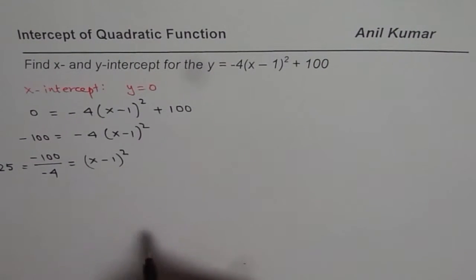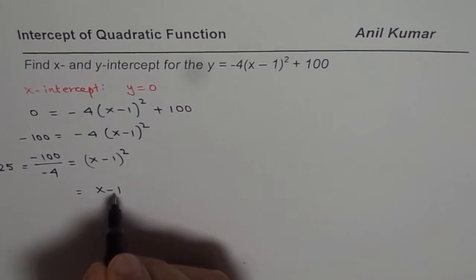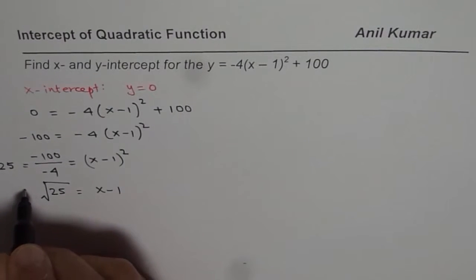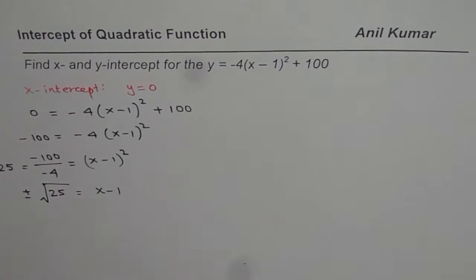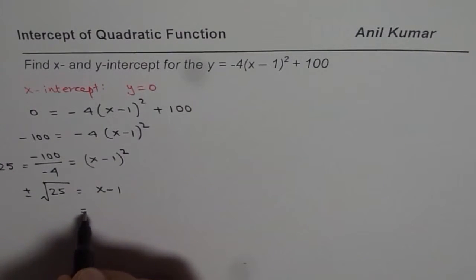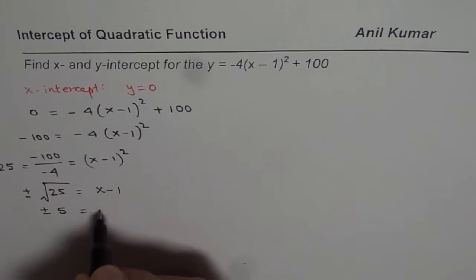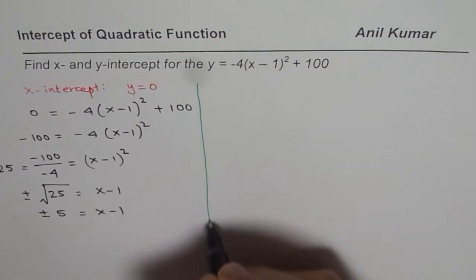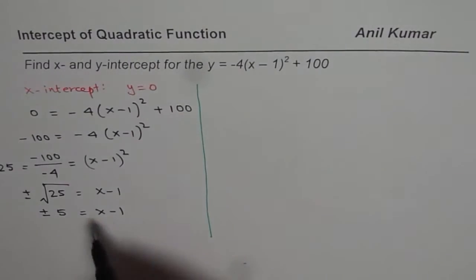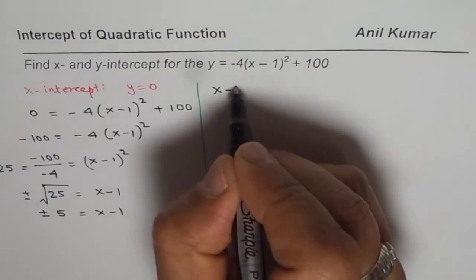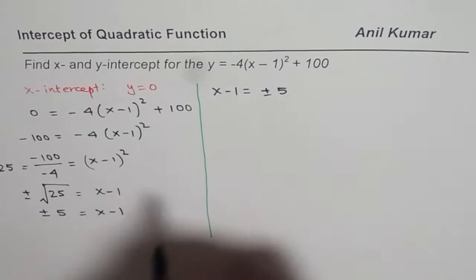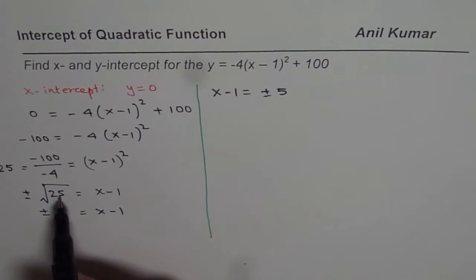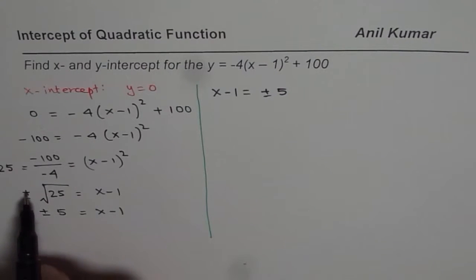Now we can square root. We get x minus 1 on the right side and square root of 25. Whenever you square root, you have to take both plus and minus signs. That gives you plus and minus 5 equals x minus 1. Now, minus 5 squared is also 25, and plus 5 squared is also 25 — that is the reason why we do plus and minus.